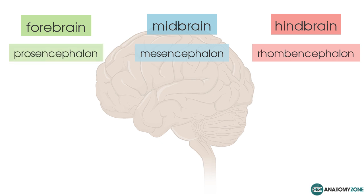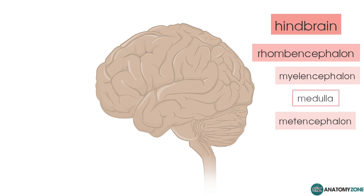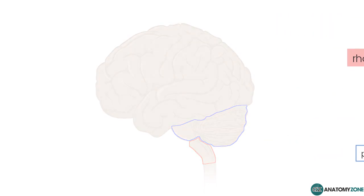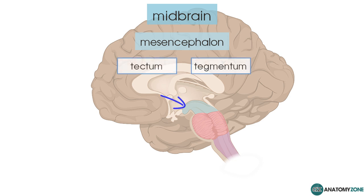The hindbrain can be broken down further into the myelencephalon and the metencephalon. The myelencephalon develops into the medulla, outlined here in red. The metencephalon forms the pons and the cerebellum, outlined in blue. The midbrain, referred to as the mesencephalon, consists of the tectum and the tegmentum, highlighted here in light blue.